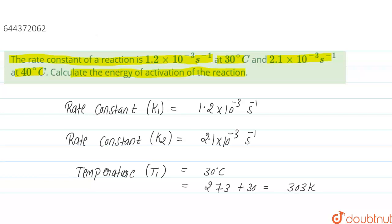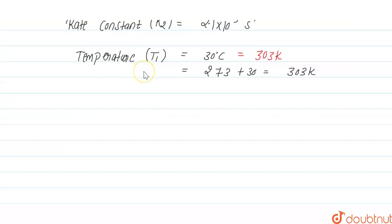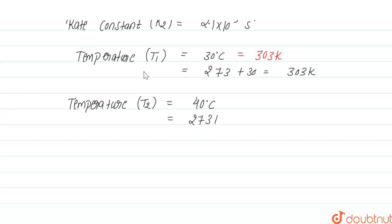So T1 = 303 K. We are also given temperature T2 = 40°C. Converting to kelvin: 273 + 40 = 313 K. So T2 = 313 K.